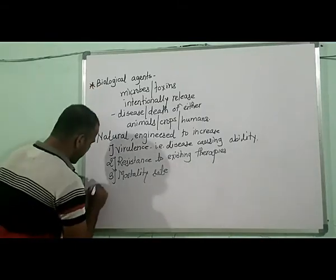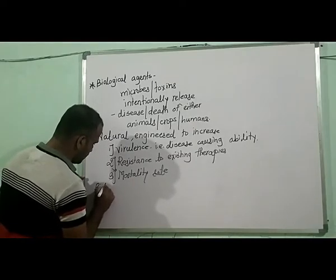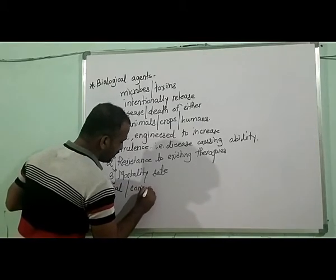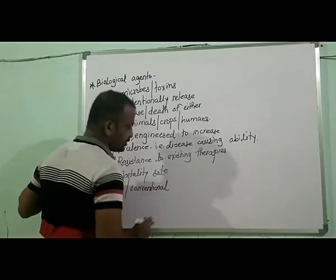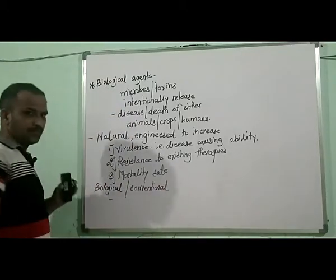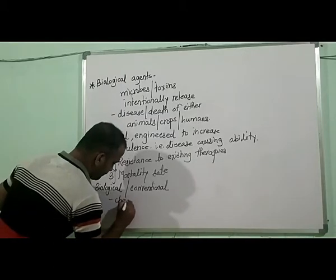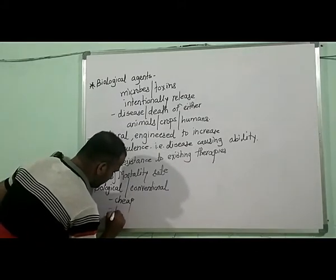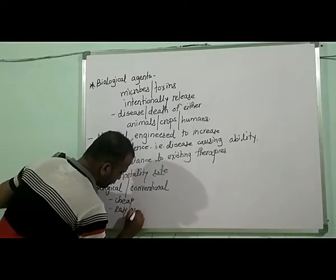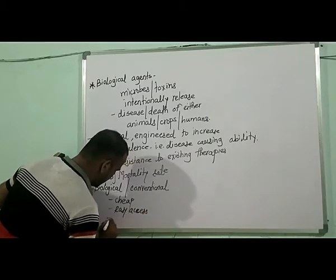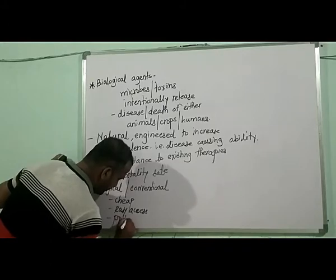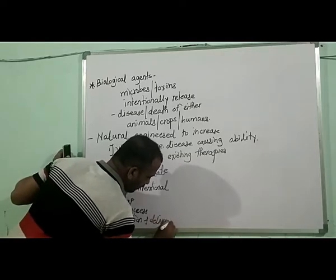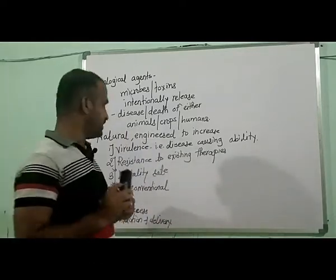These biological agents, or bioterrorism agents, are favored over conventional weapons because of three things: they are cheap and not costly, they have easy access, and the production and delivery of these biological agents is very easy.